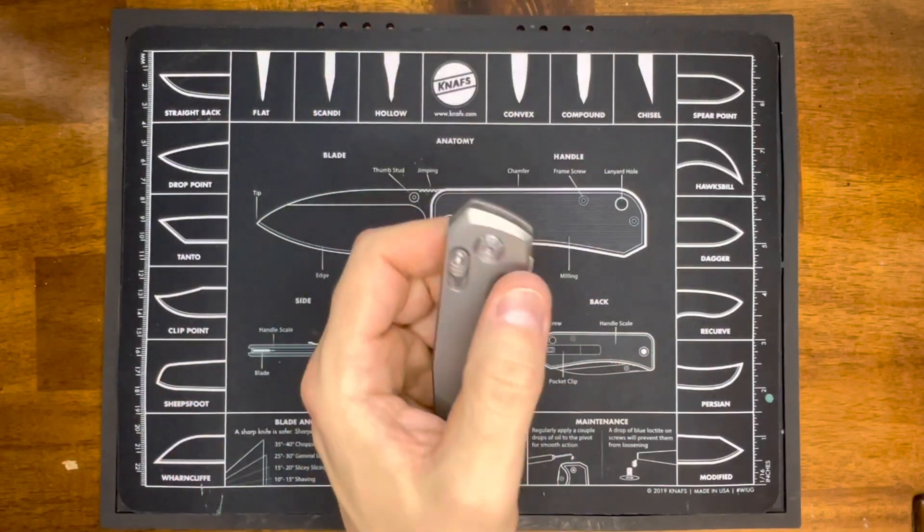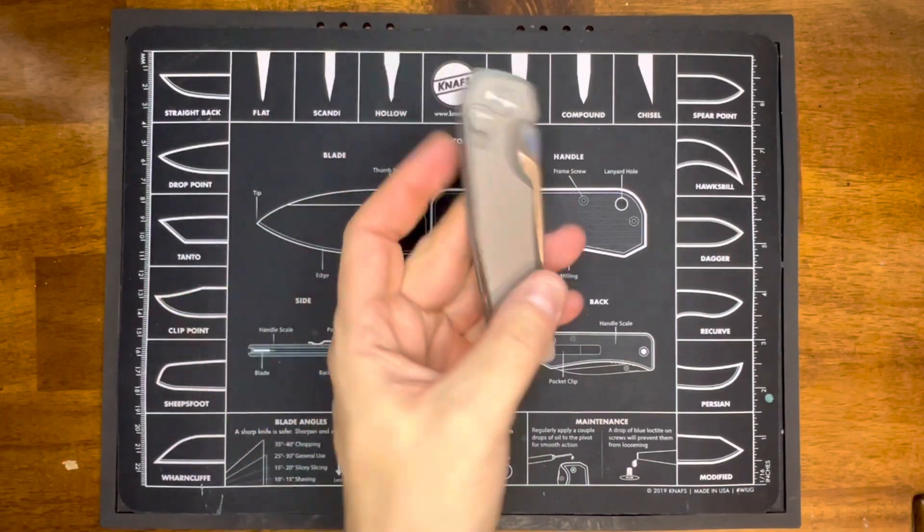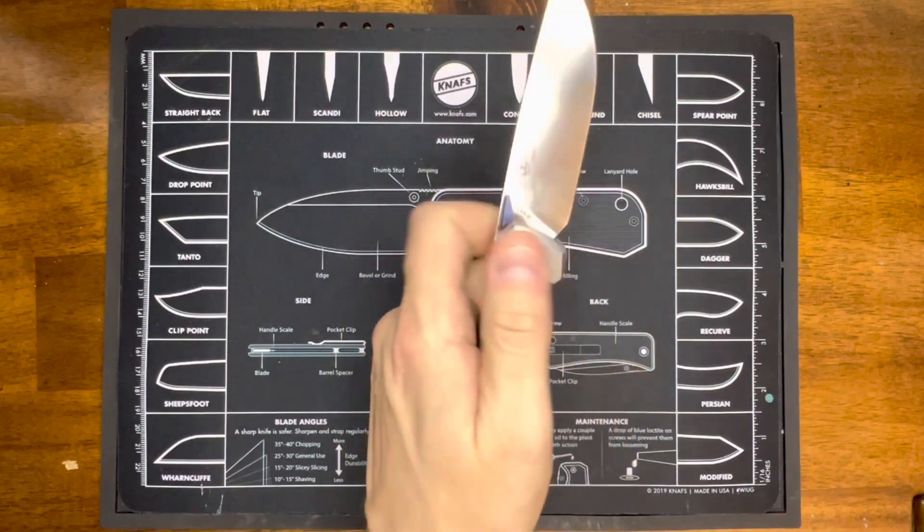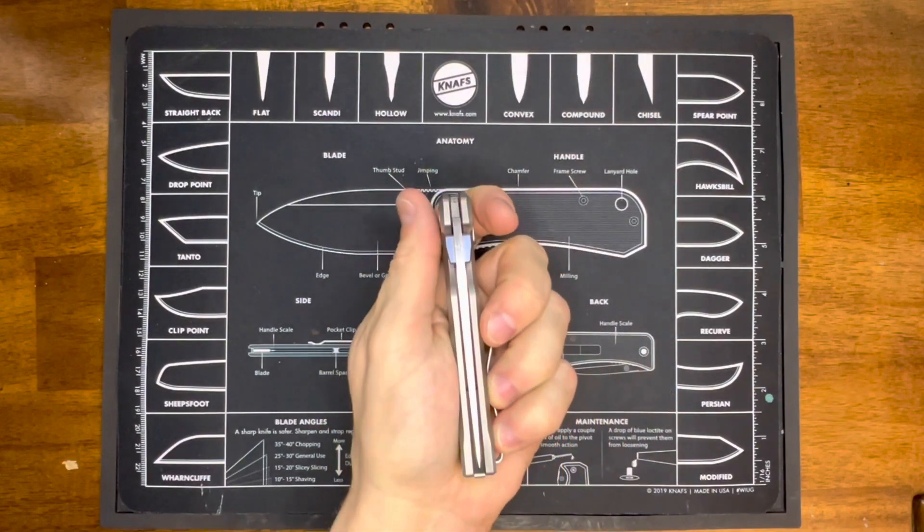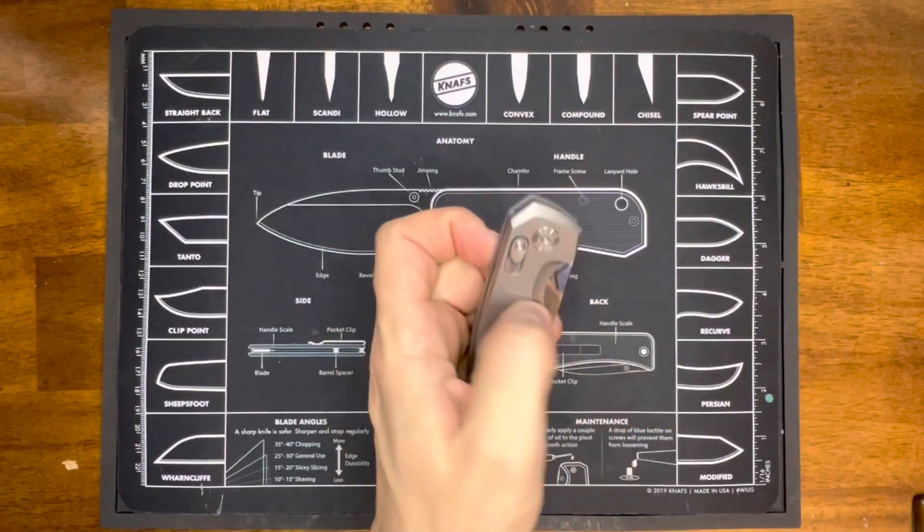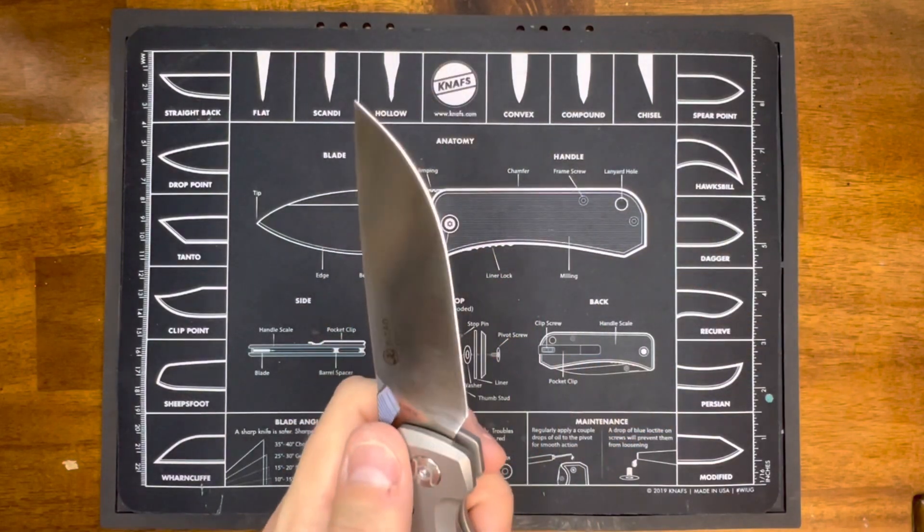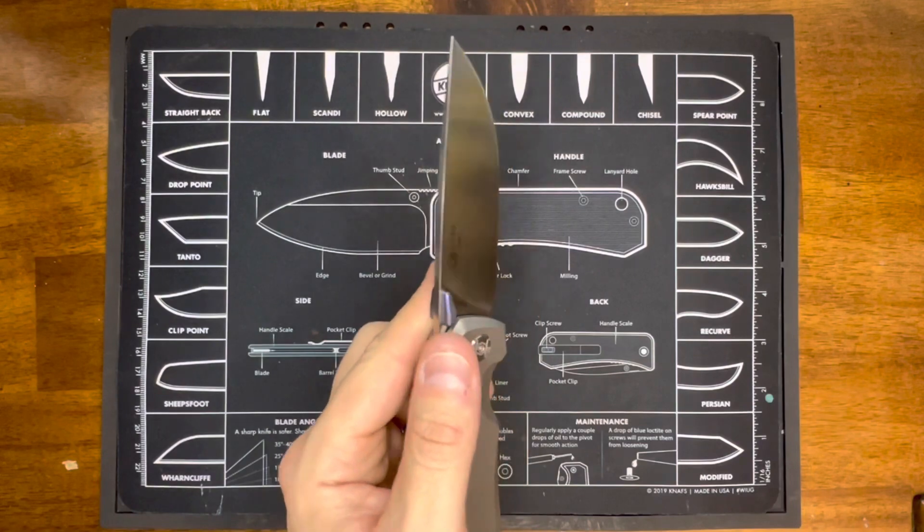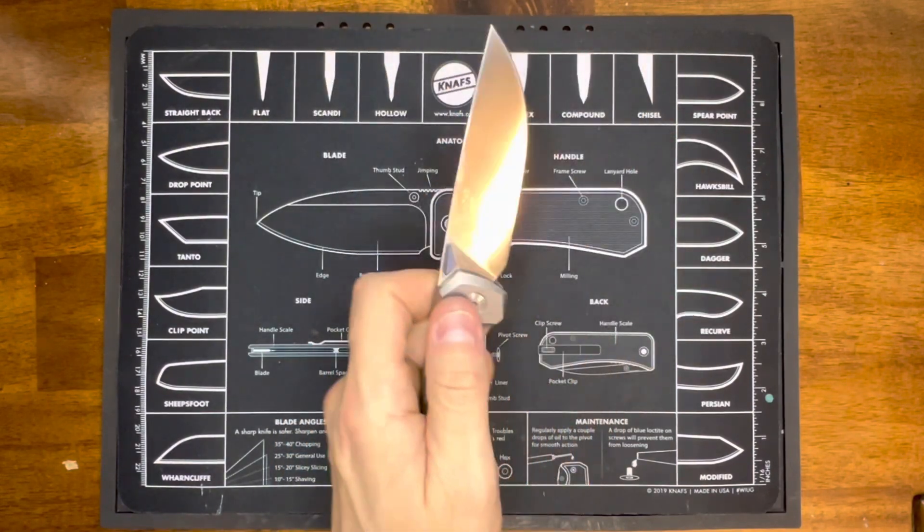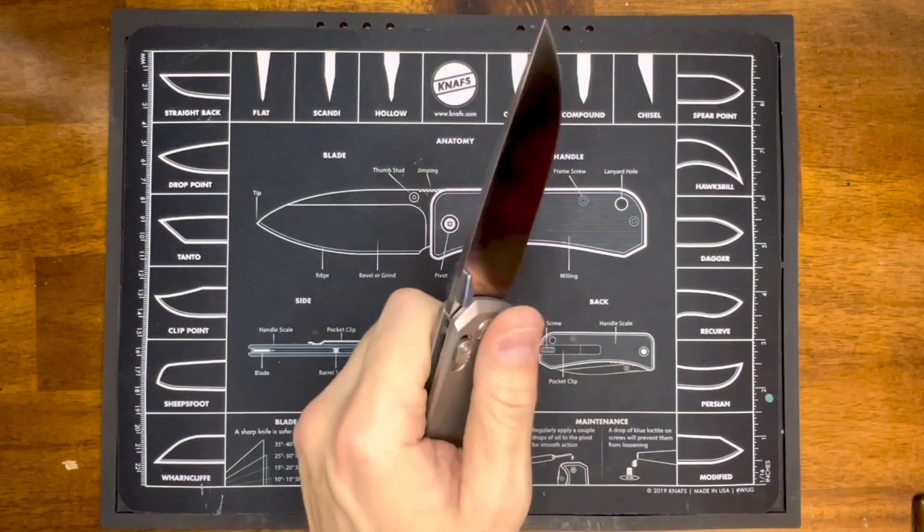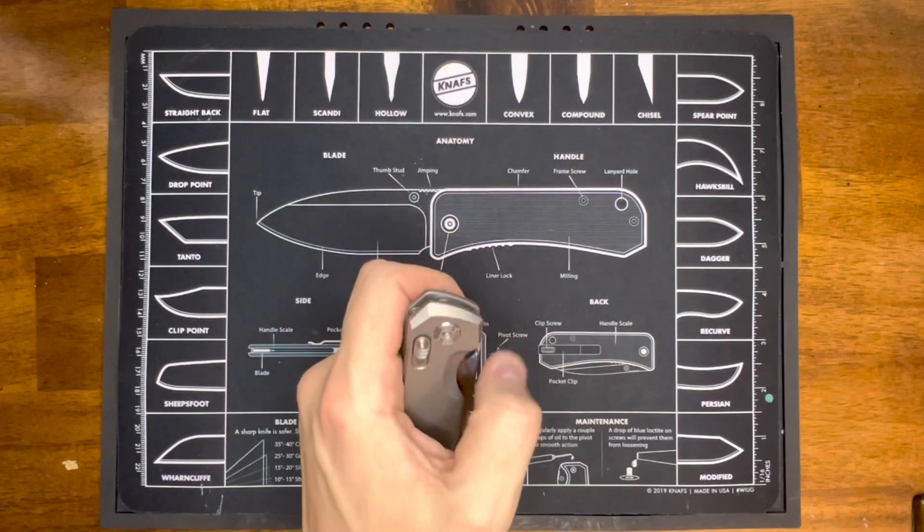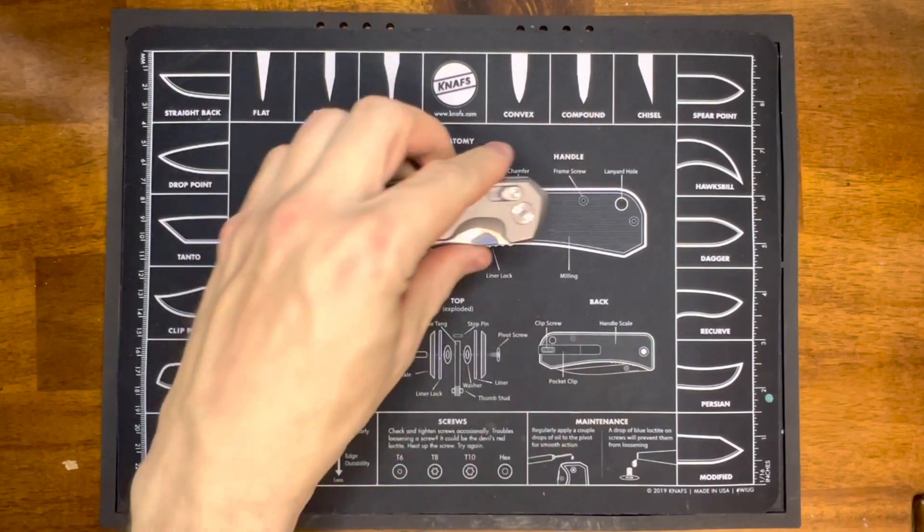It's a really nice knife. It's centered - if it's off center at all right now it's because I've been flicking it for three days. When I got it, one of the first things I noticed was that it was just dead centered. The blade is perfectly done. I've got no complaints right now. I wish there was more jimping for your thumb, but other than that, this thing is fantastic.